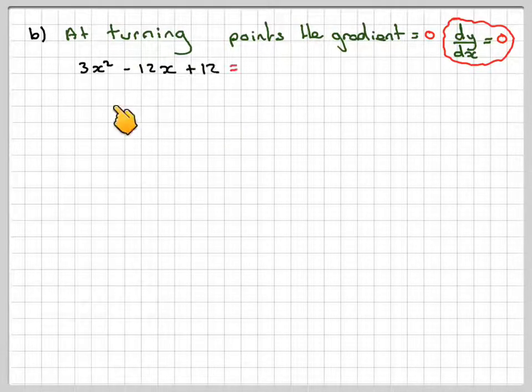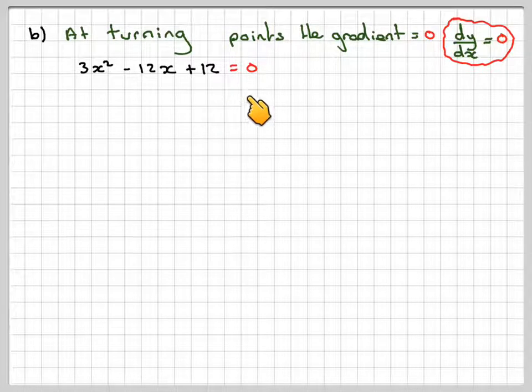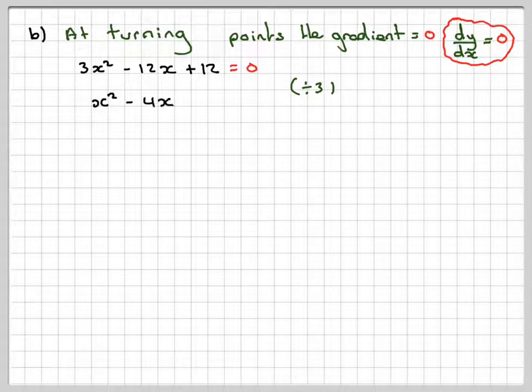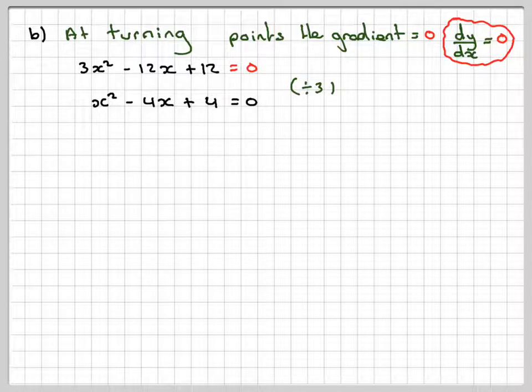So we've got 3x squared minus 12x plus 12 is equal to 0. And then we have to now solve that. All of these are divisible by 3. So make it easy for ourselves. We've got x squared minus 4x plus 4 is equal to 0.